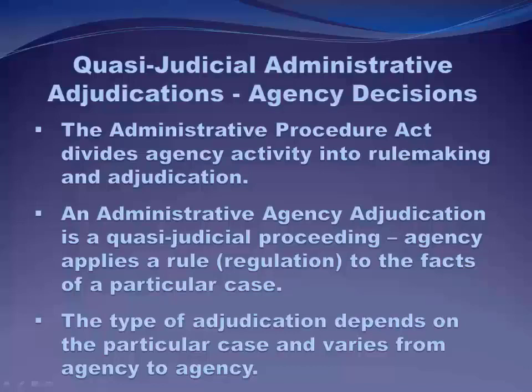As you probably remember from last week, administrative agencies have a quasi-legislative function — that's the rulemaking process that results in regulations. In that capacity, they're acting like a legislator and creating a body of written law. Executive agencies also have an executive function since they're part of the executive branch, which means they have the authority to investigate potential violations of regulations and to prosecute violators.